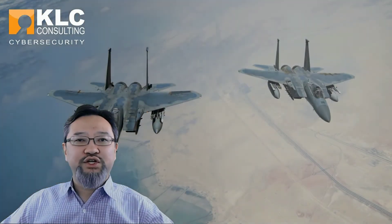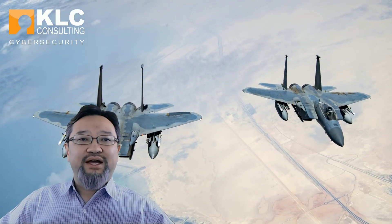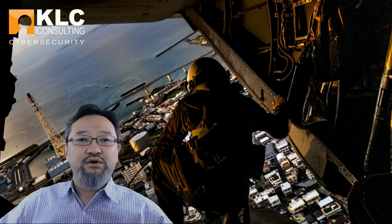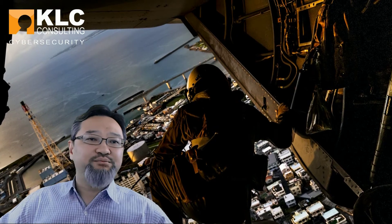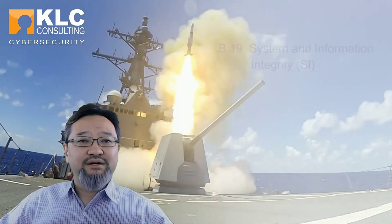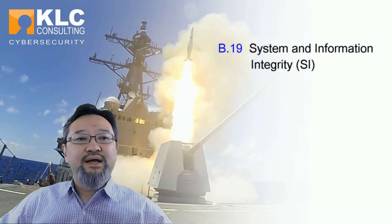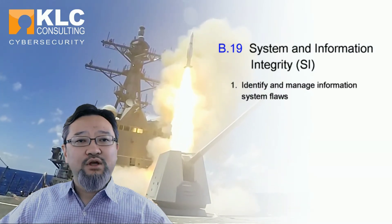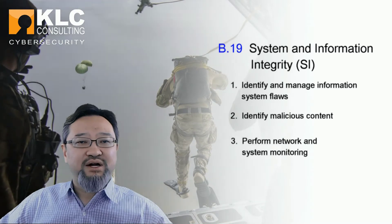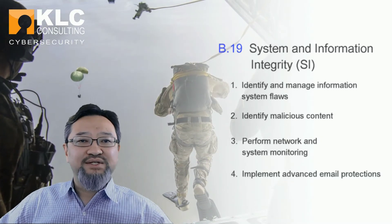Let's take a look at System and Information Integrity. System and Information Integrity activities ensure that technology assets, such as desktops or software that contain CUI, are continuously monitored to detect violations of the authorized security state. Additionally, email, which is a common attack vector, is monitored and protected to detect malicious activities. This domain contains four capabilities: 1. Identify and manage information system flaws, 2. Identify malicious content, 3. Perform network and system monitoring, and 4. Implement advanced email protections.